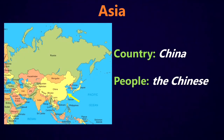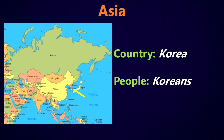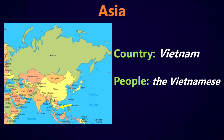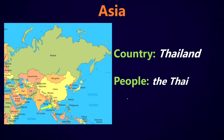If we move over to Asia, we've got China and the people are called the Chinese. The country of Japan, the people are the Japanese. The country of Korea, and the people are Koreans. The country of the Philippines, and the people are Filipinos. This one is interesting because when we're spelling it, the country usually gets a PH at the beginning, whereas the people get an F at the beginning of the word. We've got Vietnam and the Vietnamese, Thailand and the Thai. The Thai is different too, because we don't have any of the common suffixes — we just say the Thai.